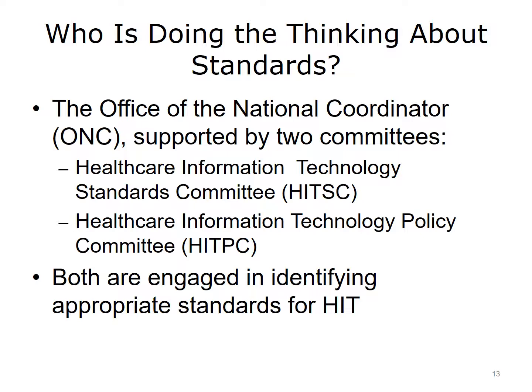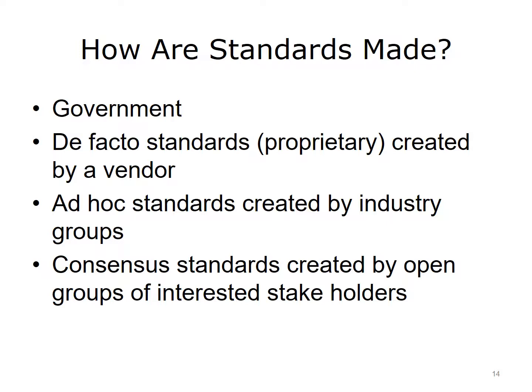Standards can be made through four different processes. First, the government creates and mandates standards — examples include NIST, the FDA, and CMS. Second are de facto standards, where a large market player creates standards the community follows because of market value — the so-called 800-pound gorillas, such as Microsoft, Apple, and Intel. Third are ad hoc standards created by a group of vendors; for example, imaging equipment manufacturers produced Digital Imaging and Communications in Medicine, DICOM. Continua is another group creating medical device and personal health device standards.